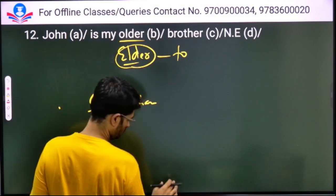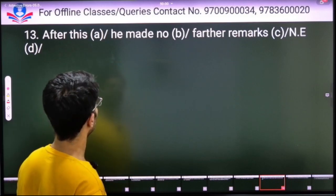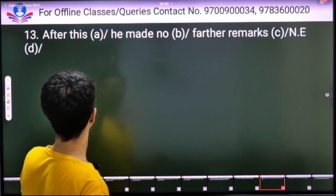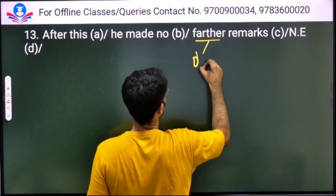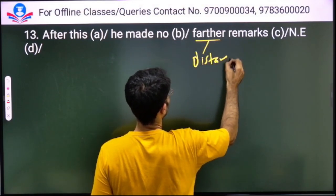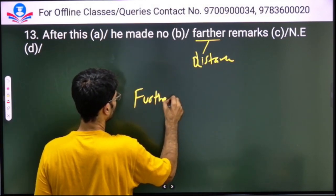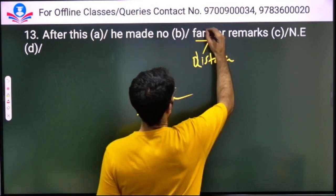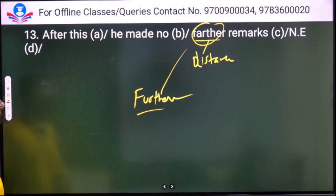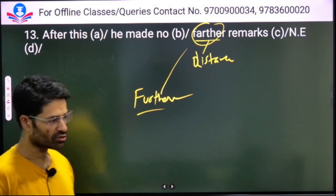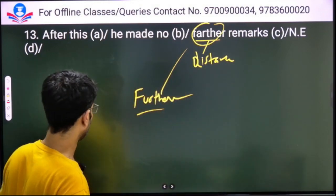After this he made no further remarks. 'Further' is correct here. 'Farther' is for distance, while 'further' means additional or next. Here it should be 'further' - no further remarks. So he didn't tell anything else.